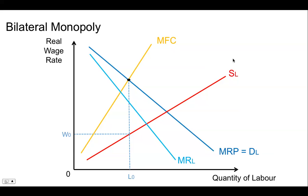And so if the trade union wants to maximize their economic rent, just like a monopoly, they will choose the quantity where the marginal cost equals the marginal revenue, which is right there. So they would say that they would set a wage where they're going to hire L2. And because they're a monopoly, the wage that's set is actually set on this point on the demand curve, which is up there. So if the trade union got involved, they could possibly set a wage as high as W2.